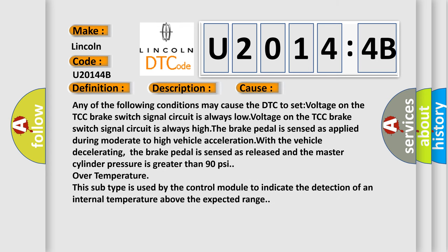Any of the following conditions may cause the DTC to set: voltage on the TCC brake switch signal circuit is always low, voltage on the TCC brake switch signal circuit is always high, the brake pedal is sensed as applied during moderate to high vehicle acceleration, with the vehicle decelerating the brake pedal is sensed as released and the master cylinder pressure is greater than 90 psi, or over temperature. This subtype is used by the control module to indicate the detection of an internal temperature above the expected range.